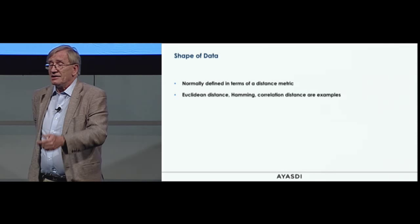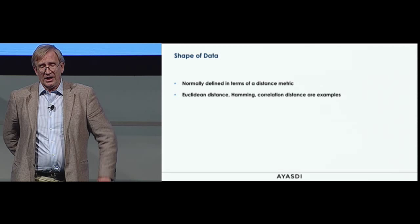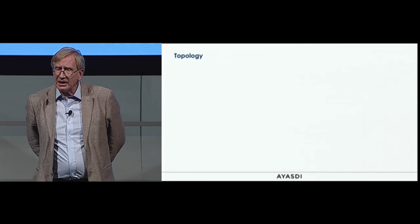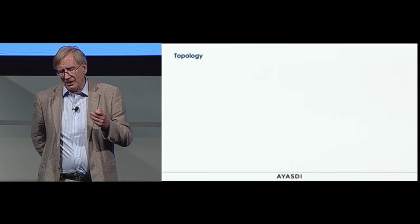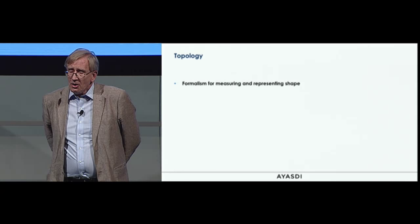The shape of data is normally defined in terms of a distance metric or a dissimilarity measure — Euclidean distance, Hamming distance, correlation distances are certainly examples. Many others have to be invented for more complex data. It encodes similarity: points that are nearby to each other are similar, and points which are far apart are dissimilar.